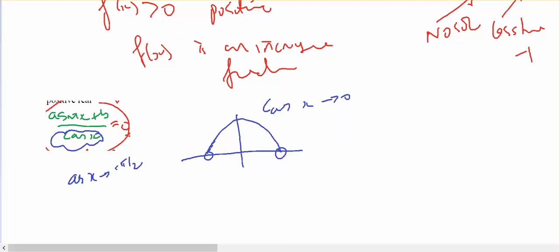Just to confirm that, as x approaches π/2, that's also going to approach positive zero, which means it's going to be asymptotic.